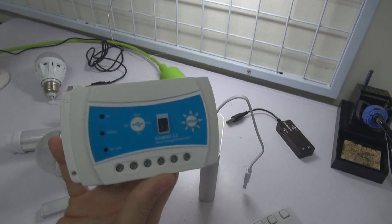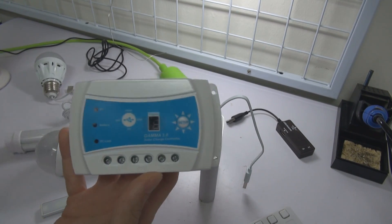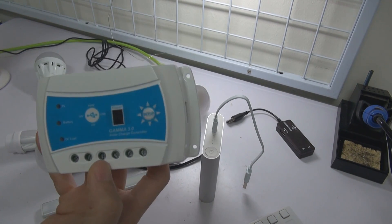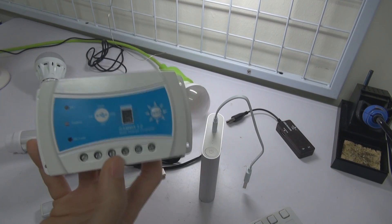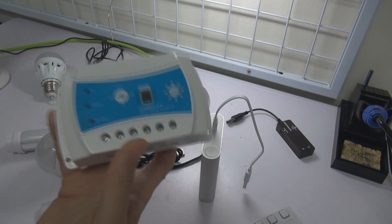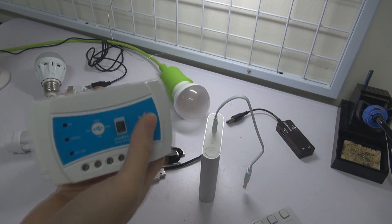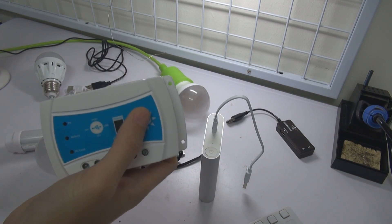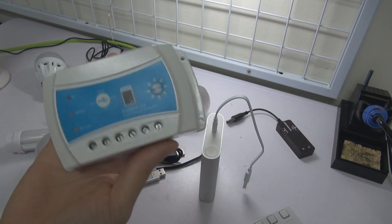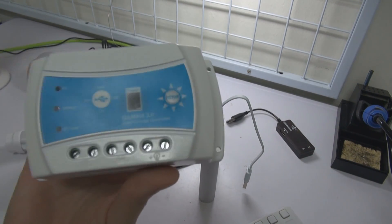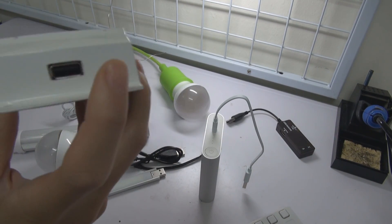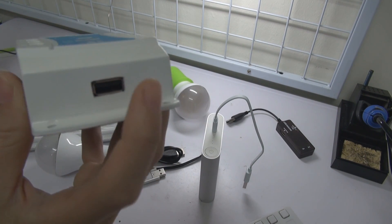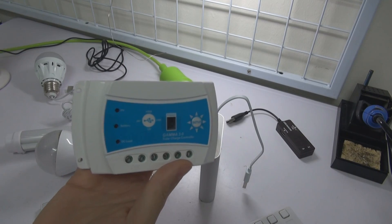The second selling point of this Gamma 3.0 is the timer control. You can find a charge controller with USB on the market, nothing to shout about. But most of them is manual on and off. For example, you press it, the USB power will be on. Some is like you plug it in, you're on. For this Gamma 3.0, the specialty of this product is that the USB here can be controlled using daylight timer.